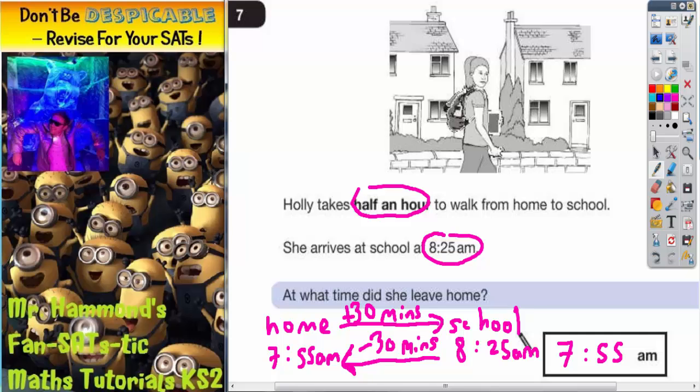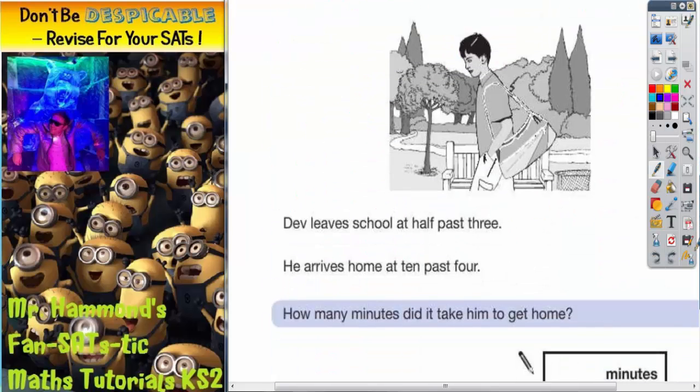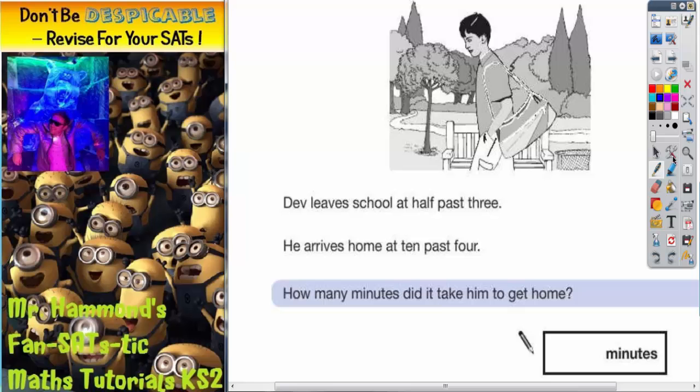Let's scroll down and see what else we've got to do. We've now got Dev leaving school at half past 3, which is otherwise known as 3:30pm. He arrives home at 10 past 4, so that's 4:10pm. How many minutes did it take him to get home?